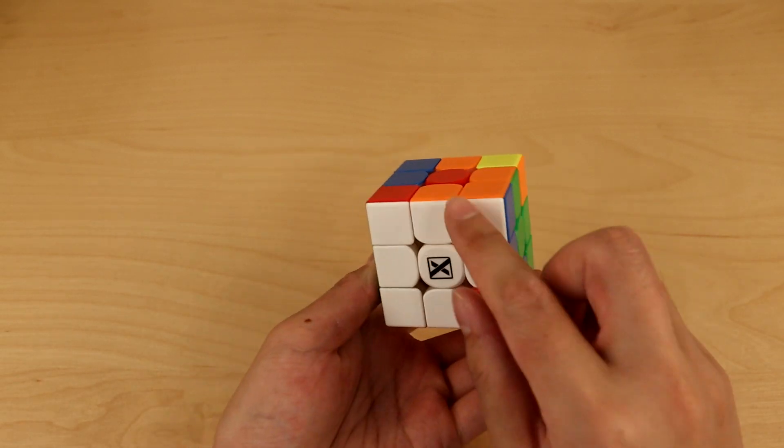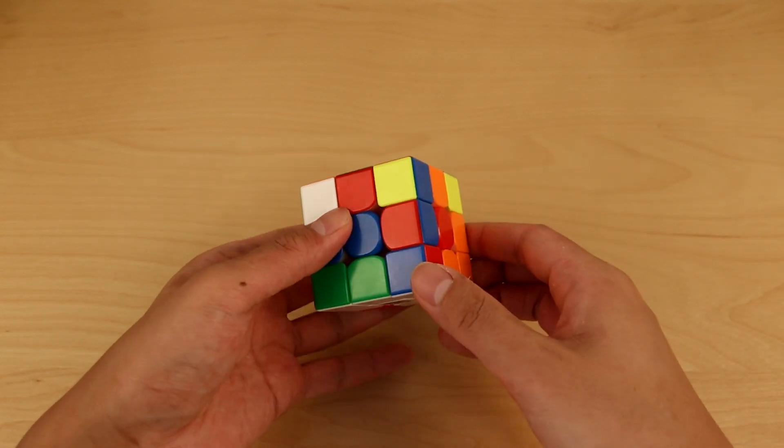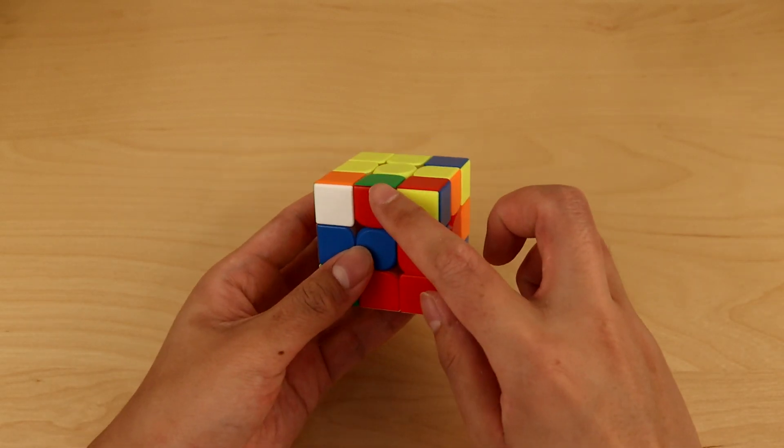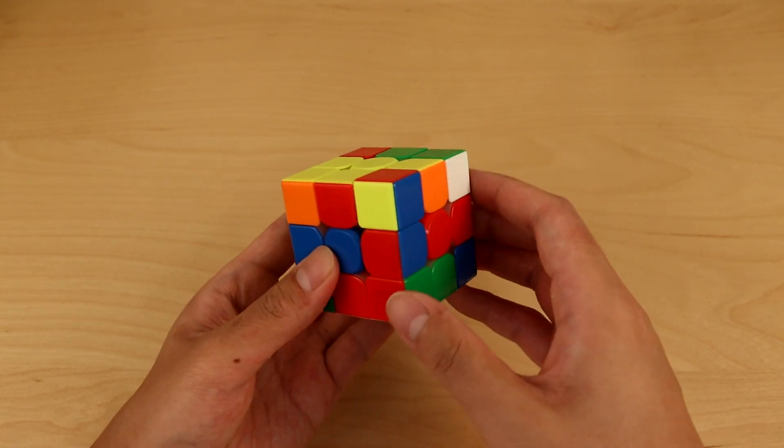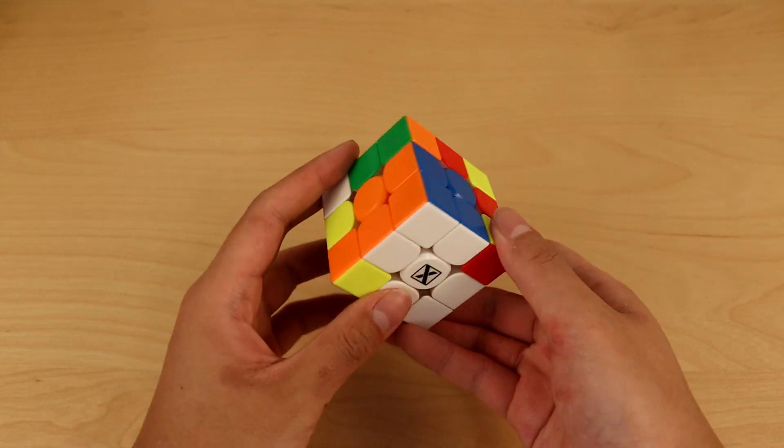We can't insert this edge here right now because that will mess up this corner, so let's first misalign the cross, then insert this edge into the back. And then with a final D move, we have a double X-cross.